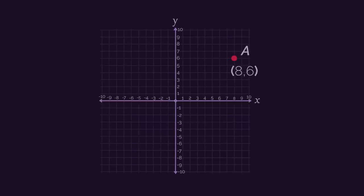I live here on the map at 8, 6, whereas my friend lives over here at negative 6, negative 2. So we want to meet exactly halfway in the middle. Where is that?